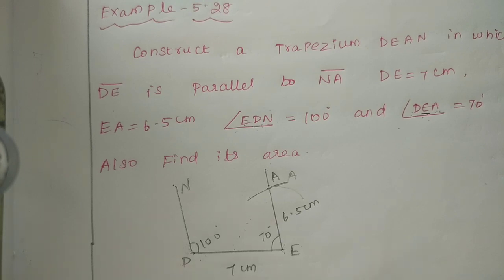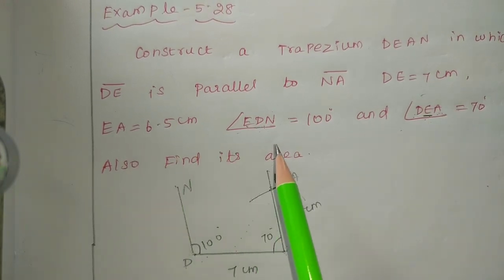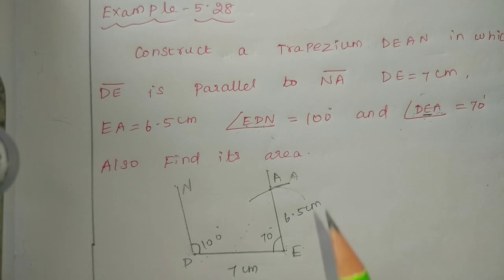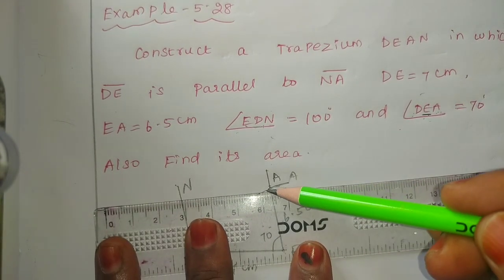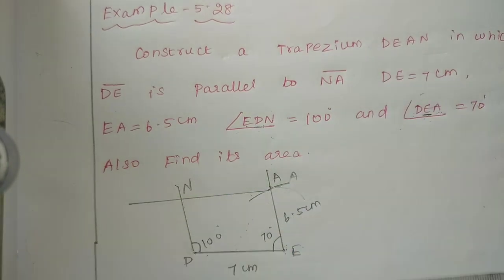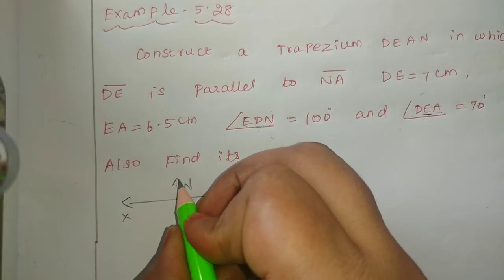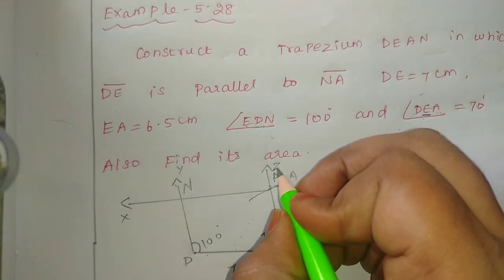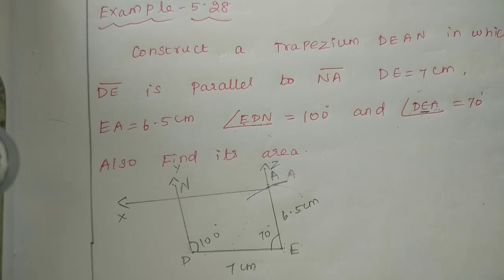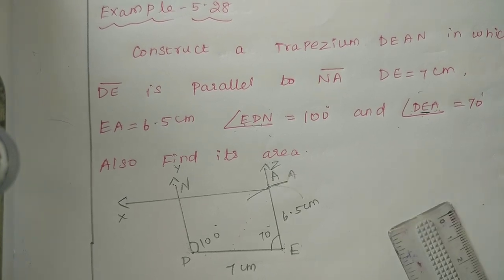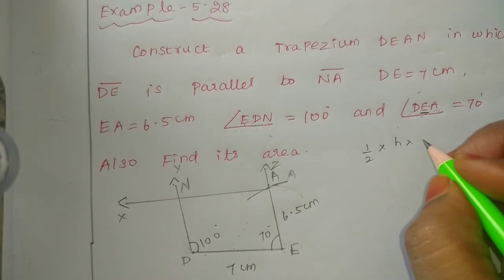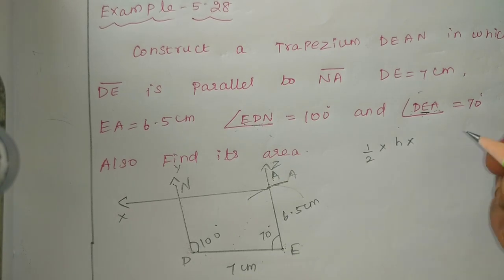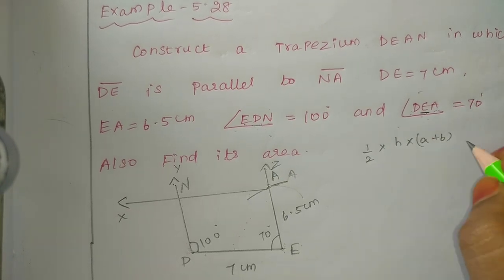We are going to join here. We are going to do D, E, A. Finally, D is parallel — after the parallel, we draw a straight line. We go to the trapezium. The trapezium formula is half into h into a plus b square units.